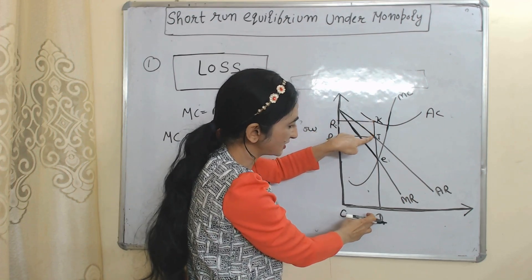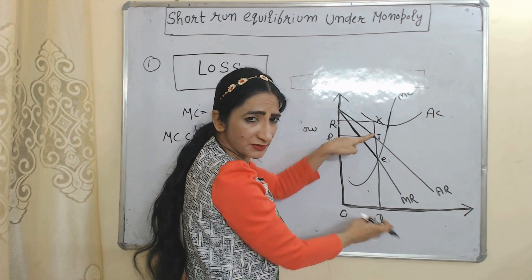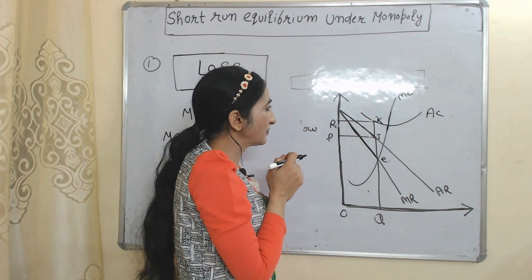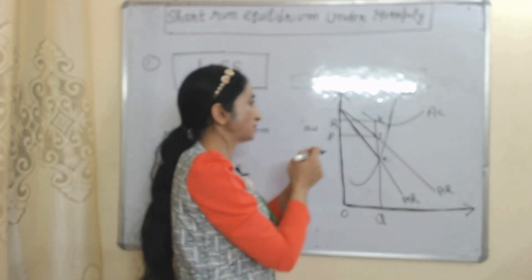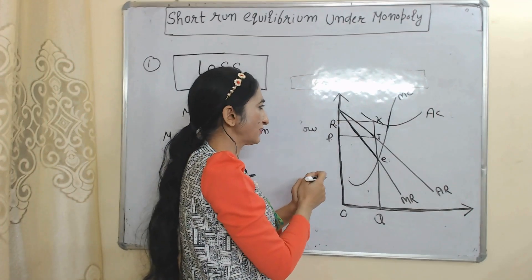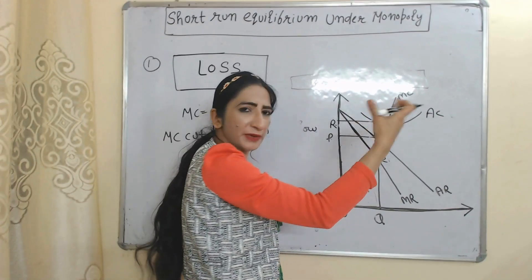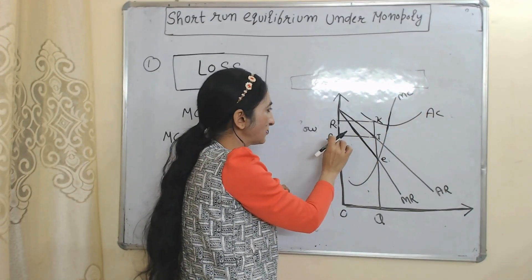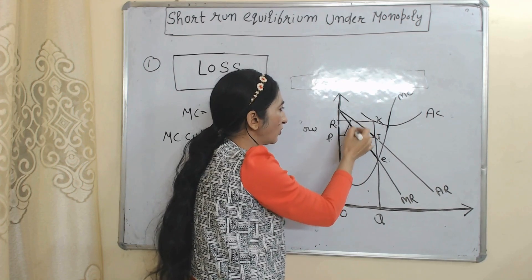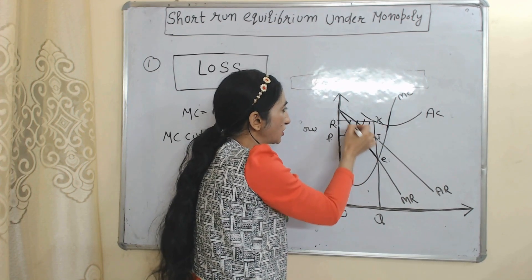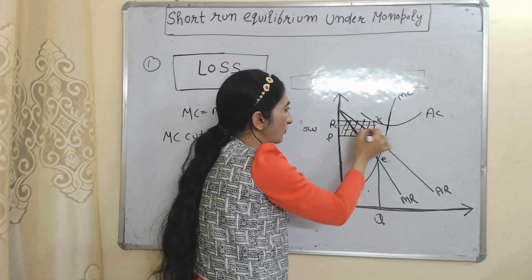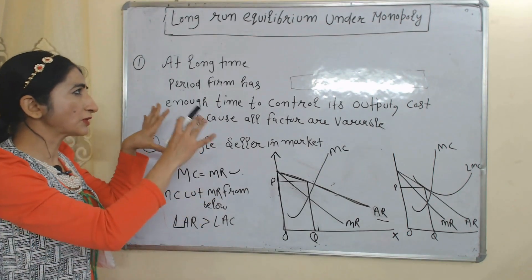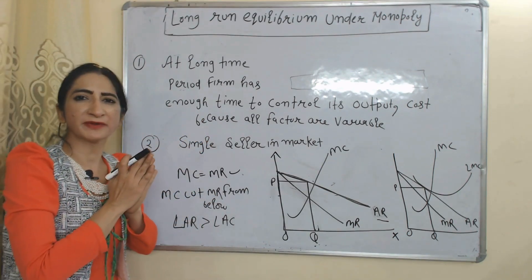Here you can see KQ is more than TQ, meaning average cost is more than average revenue. The difference between average cost and average revenue — KT — will be called per unit loss. And this whole area PRKT will be called the total loss of the monopoly at the short-run period.